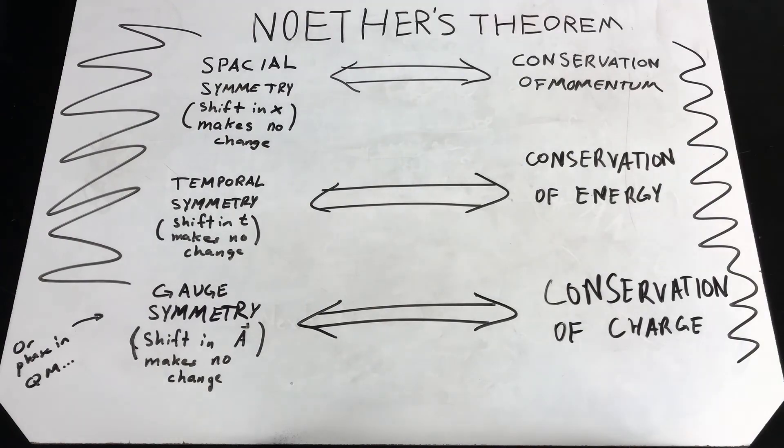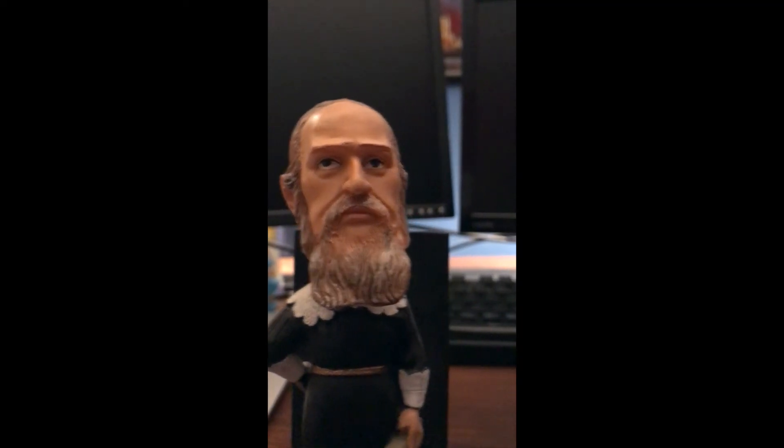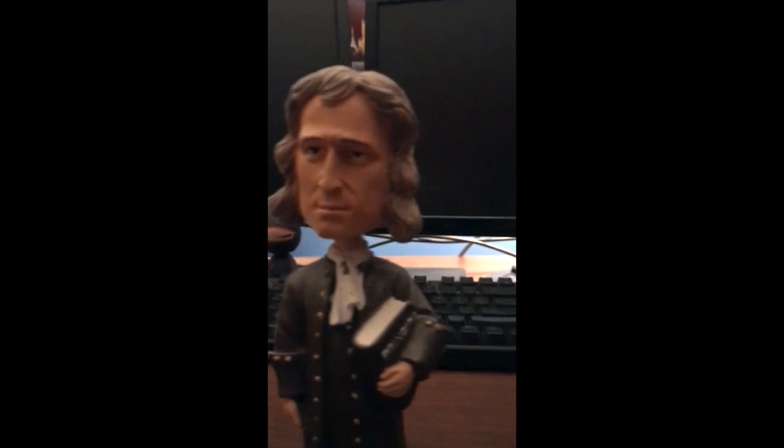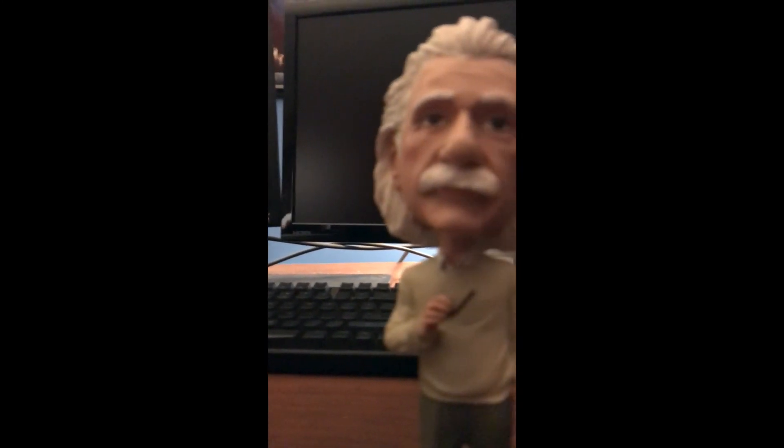So there you go. The basic history of classical mechanics in a nutshell. By the time Emmy Noether completes her theory, Einstein is essentially finished with general relativity. Beyond that, quantum mechanics takes the lead. But another brief history will do for that.